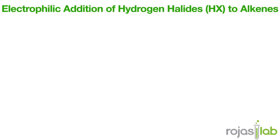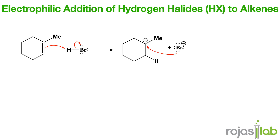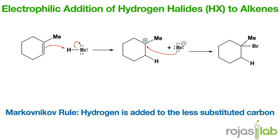We can also do electrophilic addition of acids to alkenes — specifically, addition of a hydrogen halide (HX) to the alkene. The mechanism begins with protonation of the double bond with the acid, generating a carbocation. From here, the halide attacks, resulting in an alkyl halide product. Just like before, this always results in Markovnikov addition, unless you use peroxides, in which case you can form the anti-Markovnikov product.